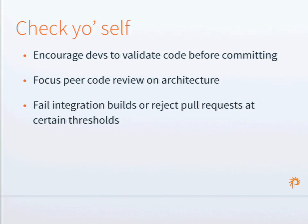This can also let you do more advanced steps, like having integration builds automatically fail at certain levels of code style issues — even rejecting pull requests automatically if they have a certain number of code style issues, to really enforce expectations around code style.